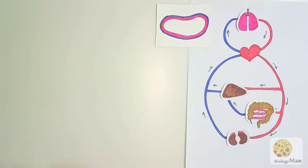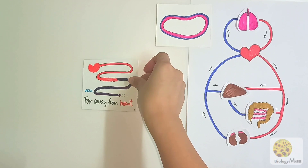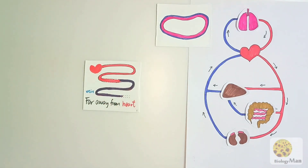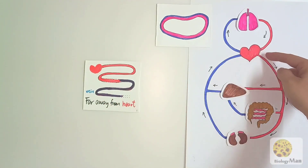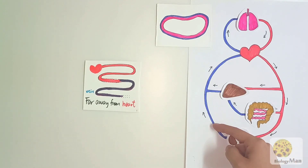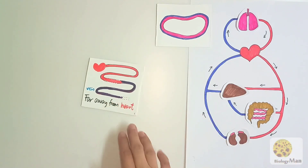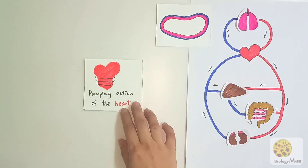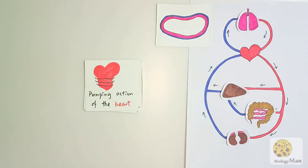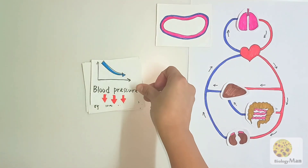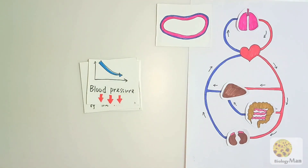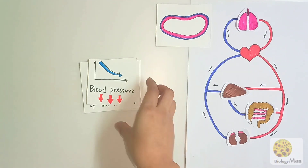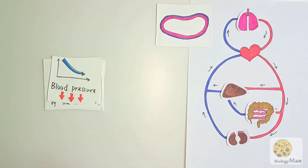Veins need to overcome some difficulties. First, they are far away from the heart — the blood comes a very long distance. Also, the pumping action of the heart cannot provide high blood pressure in the vein, so the blood pressure in veins is low.